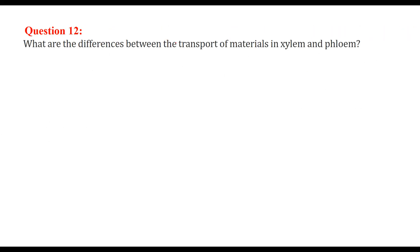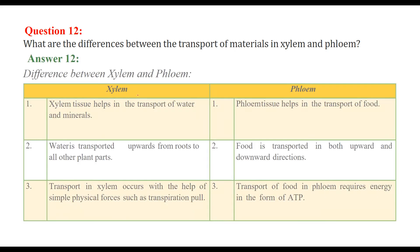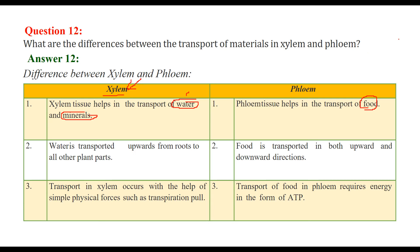What are the differences between the transport of materials in xylem and phloem? Xylem helps in the transport of water and minerals, while phloem helps in the transport of food. Water is transported upwards from the root to other plant parts by xylem, while phloem transports food in both upward and downward directions. Transport in xylem occurs with the help of a simple physical force called the transpiration pull, whereas phloem transport requires energy in the form of ATP.